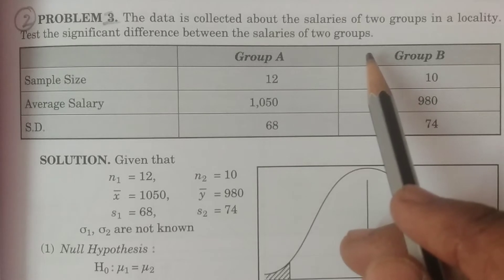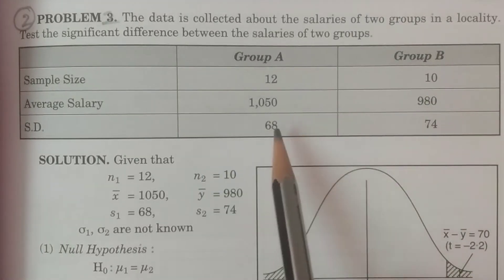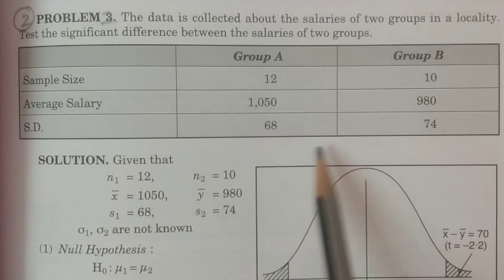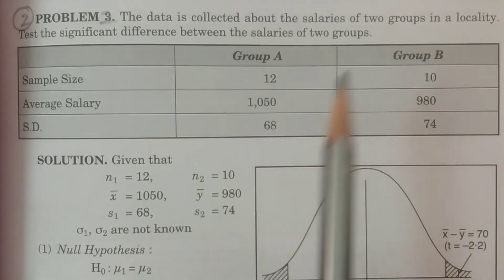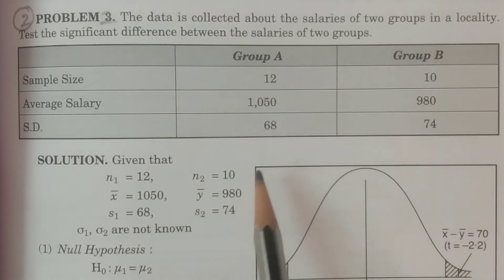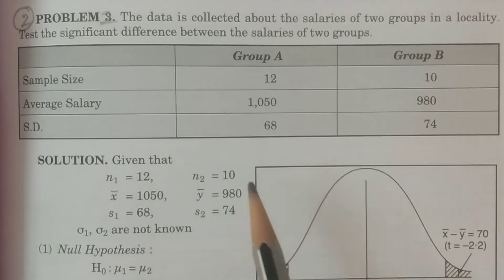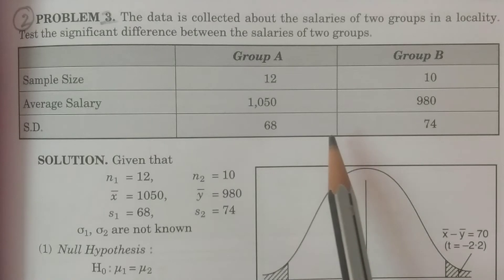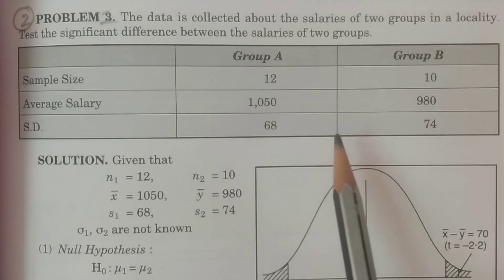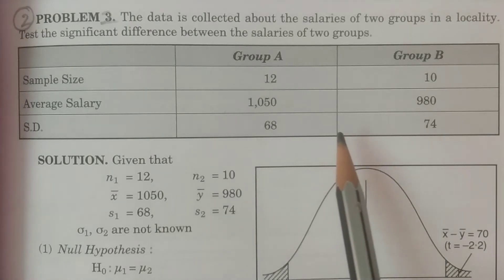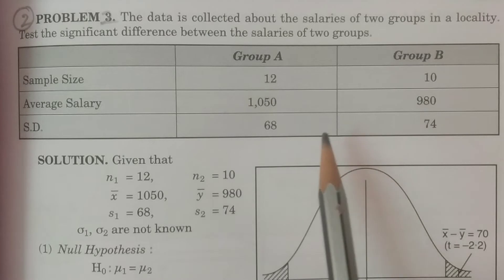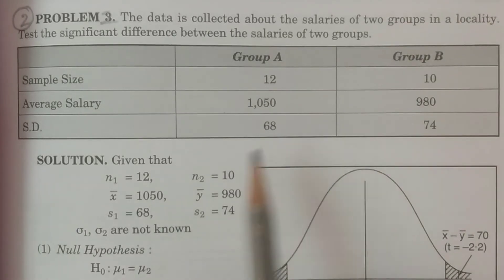You see this kind of problem — this kind of table — we have observed in the large samples as well. In the large samples we have calculated and conducted a test for two means. This is also looking to be the same, and in the small samples also we are conducting a test for two means.